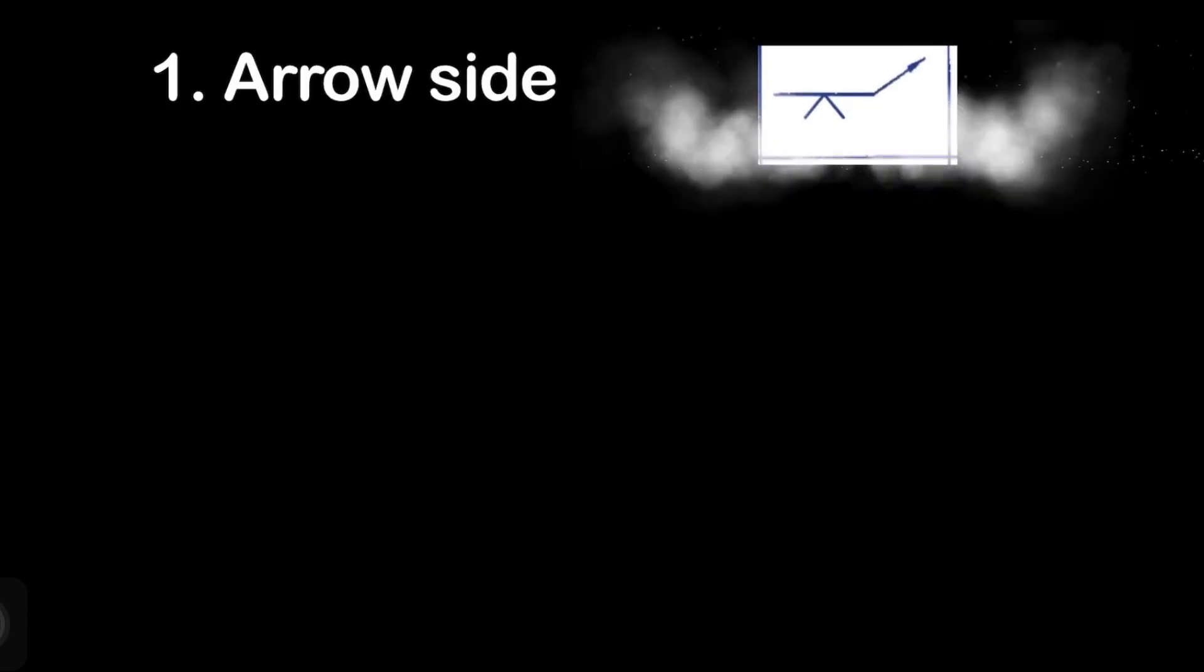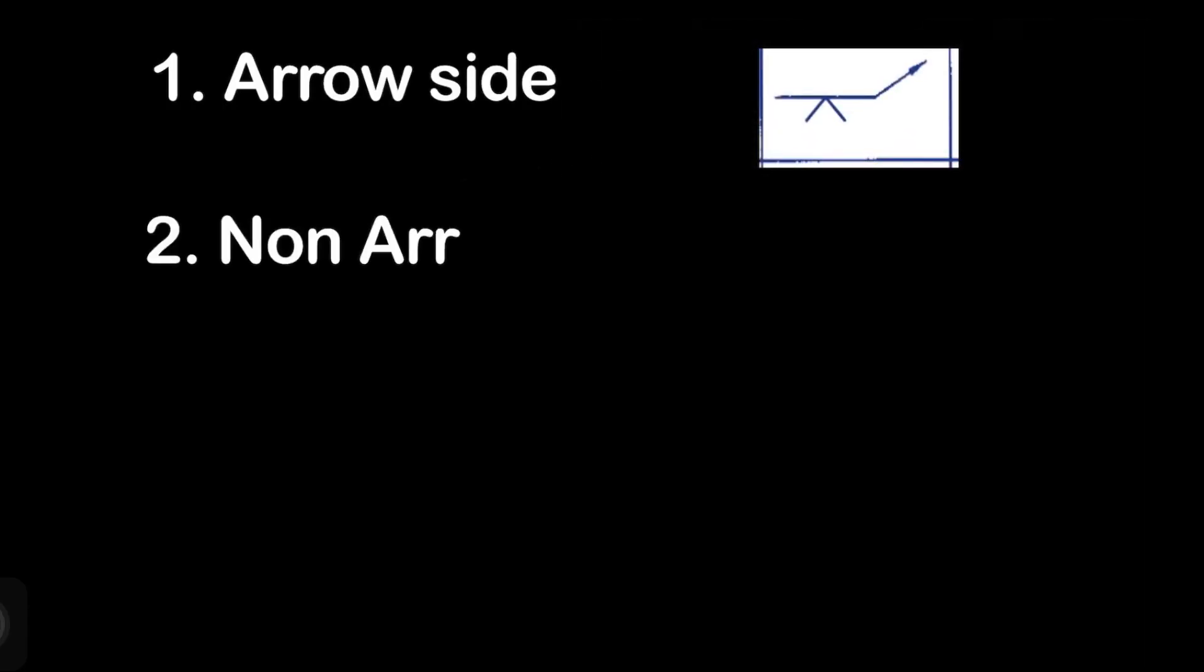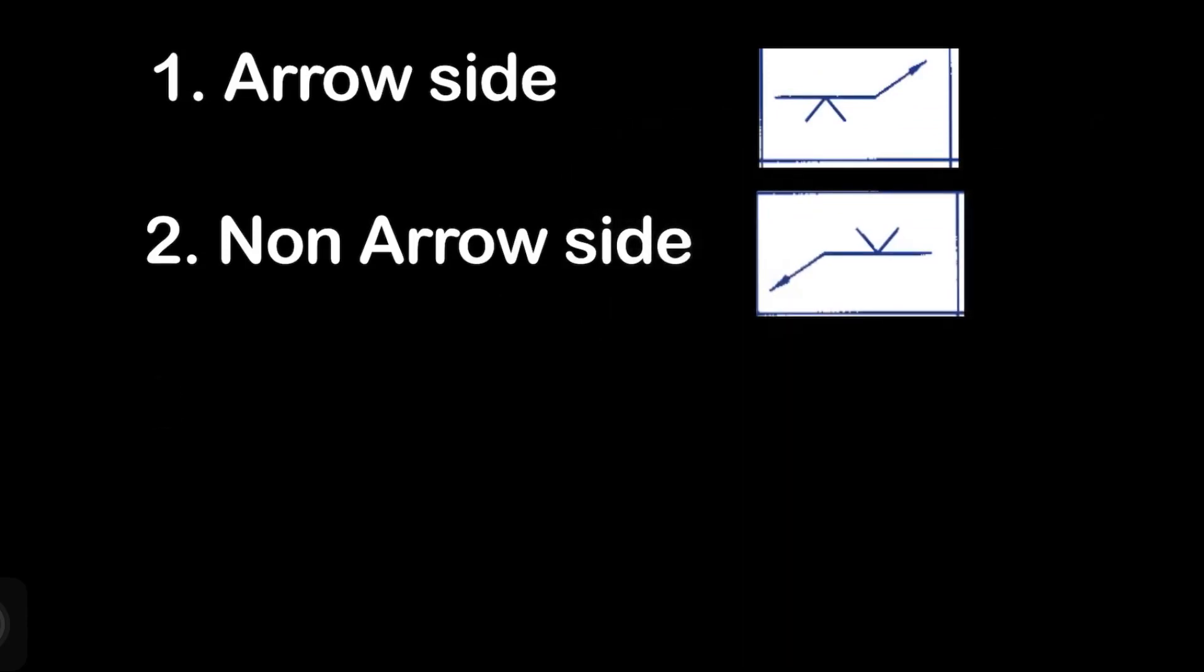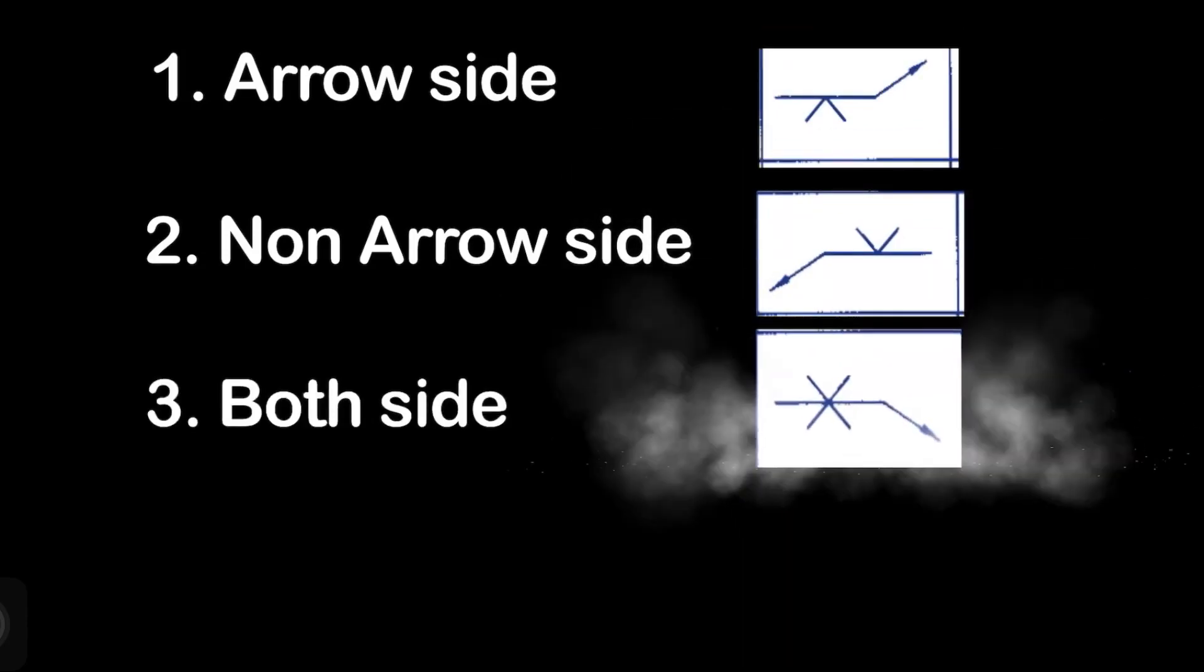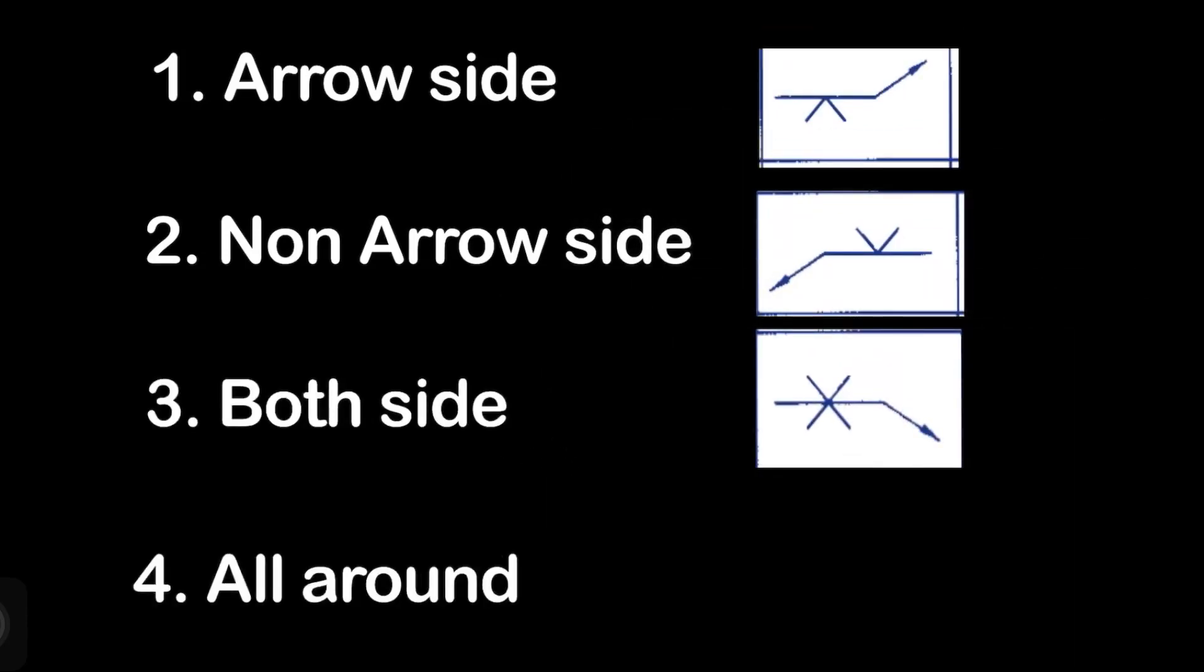First one is welding at arrow side, and second one is welding at non-arrow side. Third one is welding at both sides. Fourth one is welding all around.